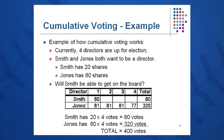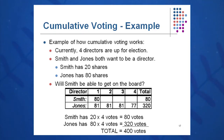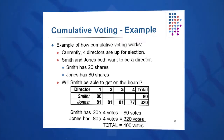Smith has 20 shares to begin with; Jones has 80. In straight voting, Jones would win every seat — it would be 80 to 20 each time, and Jones would win all four seats on the board. Smith has no chance. However, in cumulative voting, there is a possibility that Smith can get on. We need to find how many shares Smith needs to guarantee himself a seat.